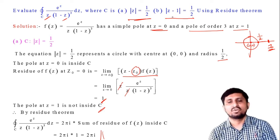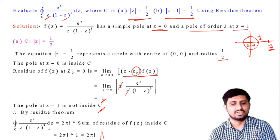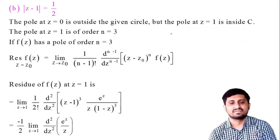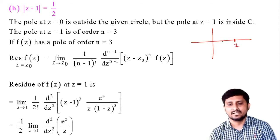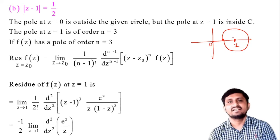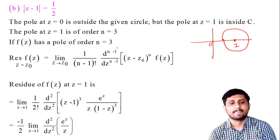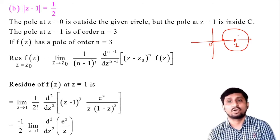Now we find the value of the integration for the second circle |z−1| = 1/2. This circle has center 1 and radius 1/2. So z=0 is outside this circle and z=1 is inside this circle. Therefore we find the residue at z=1 only. Now z=1 is a pole of order 3, so n=3.